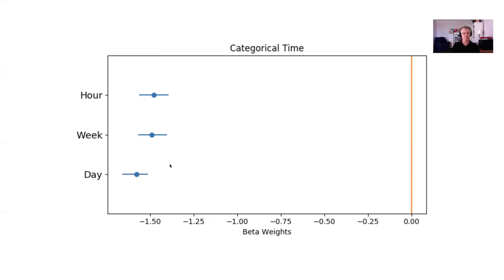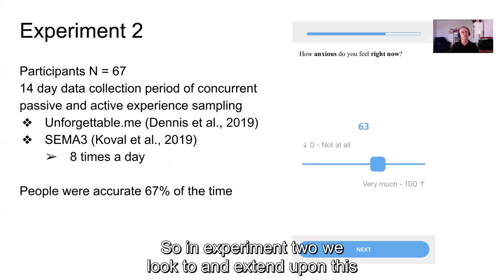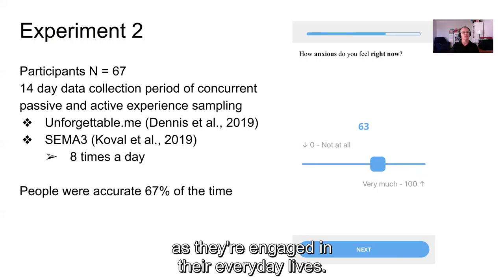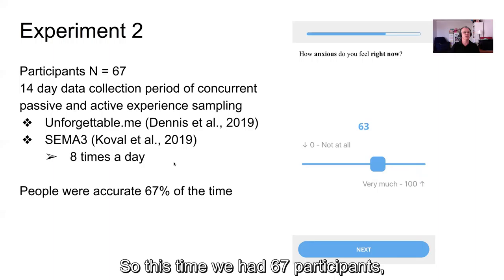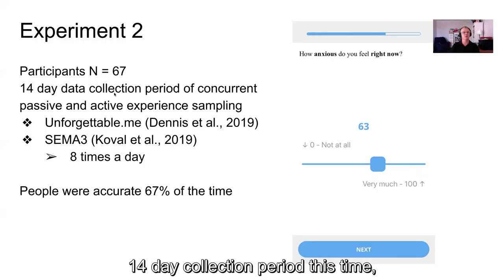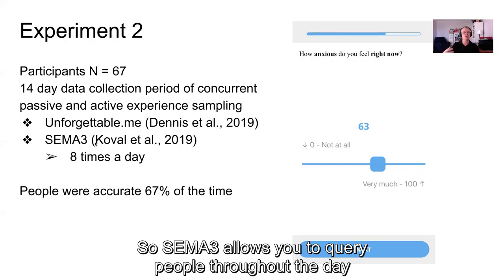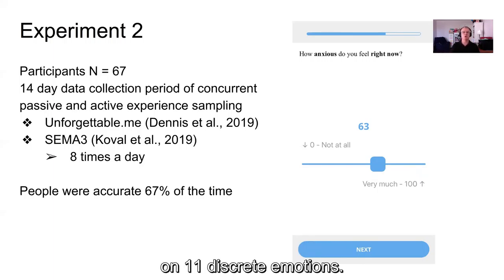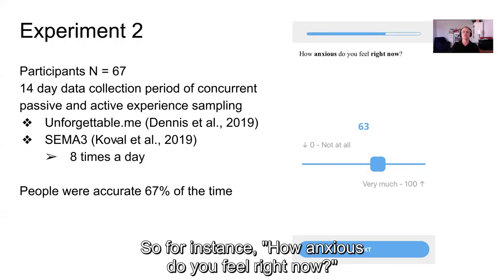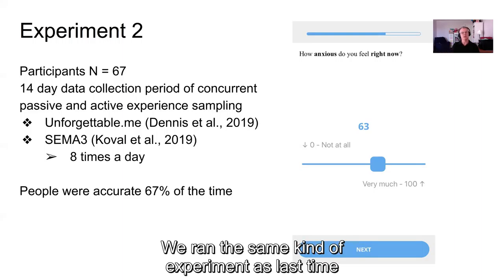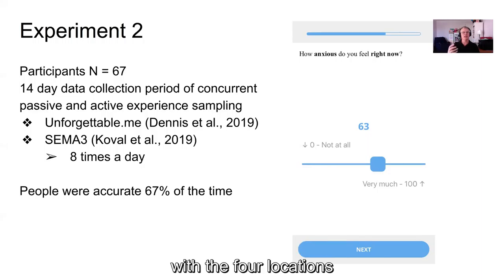And this is exactly the error that Cotton made. In experiment two, we expanded upon this by looking at the impact of people's emotions as they engage in everyday life. We had 67 participants and a 14-day collection period, using Unforgettable as before, but also the CIMA 3 app, which allows you to query people throughout the day. We queried them on 11 discrete emotions — for instance, 'how anxious do you feel right now?' on a zero to 100 scale. The same four-location task was used, and this time people were accurate 67% of the time.